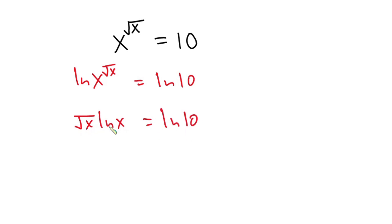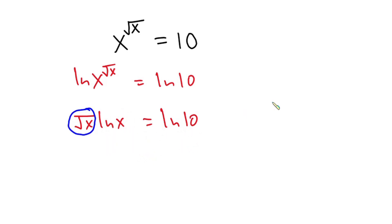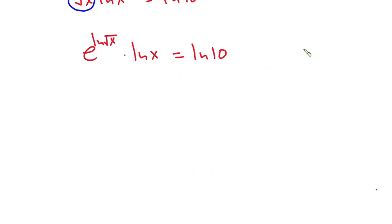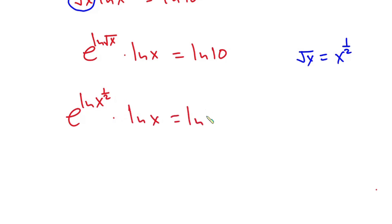Now we are looking for x in this equation. If I divide each side by square root of x, I still have x here, so that leads to something else — I don't want to do that. Let's focus on square root of x. This can also be written as e to the power natural log of square root of x. So in place of square root of x, I put that, giving us e to the power natural log of x to the power one half, times natural log of x, equal to natural log of 10.